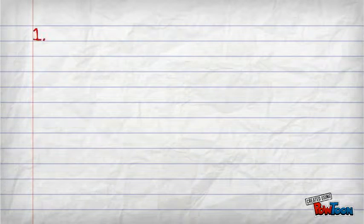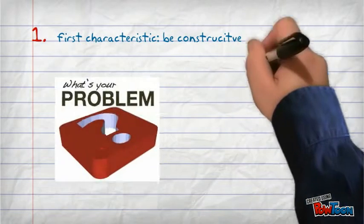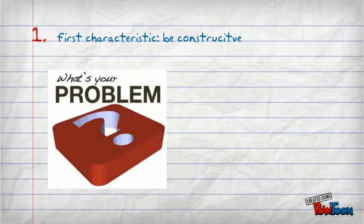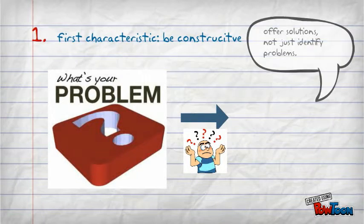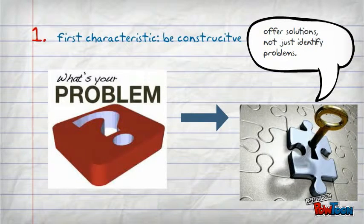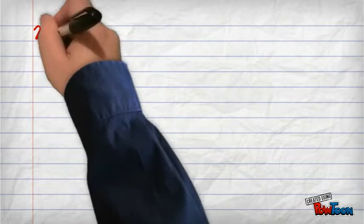The following characteristics to write effective recommendations should be considered. The first characteristic is being constructive: not only identify the problem, but also offer a solution to the problem.